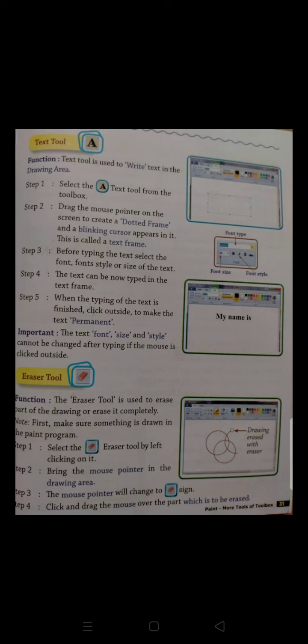Students, what does text mean? To write. To write words. To type. We call this text. Function. Text tool is used to write text in the drawing area. What does text tool do? Text tool writes text in the drawing area. And what is drawing area? The white area is our drawing area. So what is the function of text tool? Text tool is used to write in the drawing area.